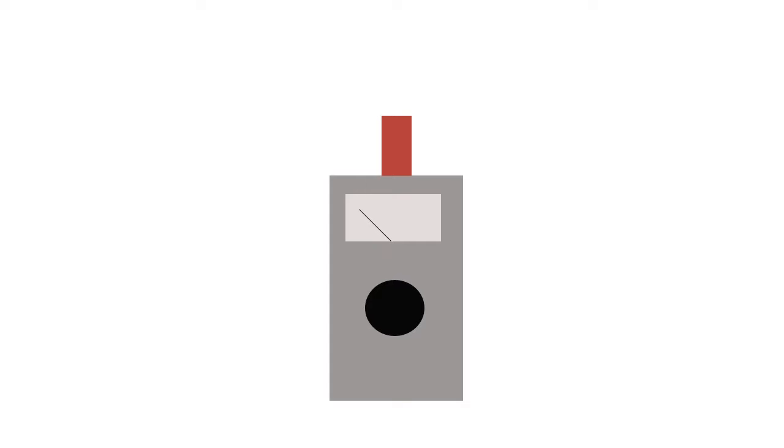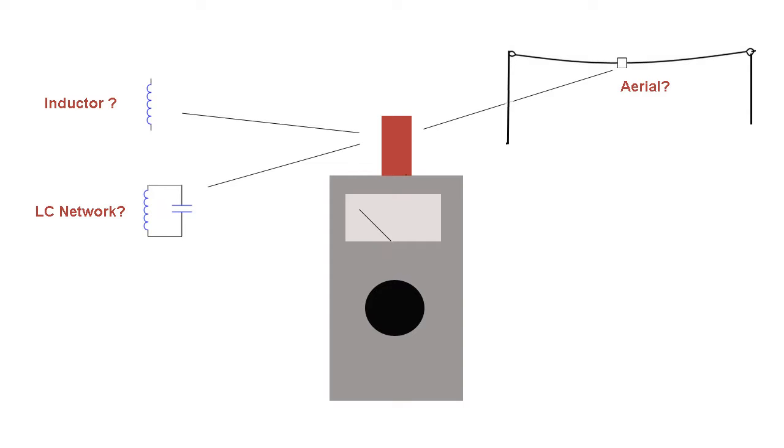What can you do with a GDO? A lot of tasks associated with measuring and generating radio frequency circuits. For example, measuring resonant frequency of an inductor or LC network, from which you can calculate the inductance of a coil or capacitance of a capacitor. You can measure the resonant frequency of an aerial or antenna, and measure the frequency of an RF signal such as from a radio transmitter. The device will also generate low-level RF sine waves.